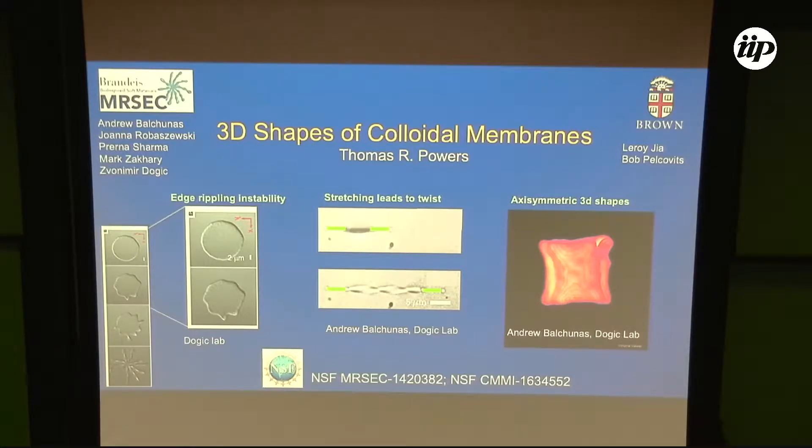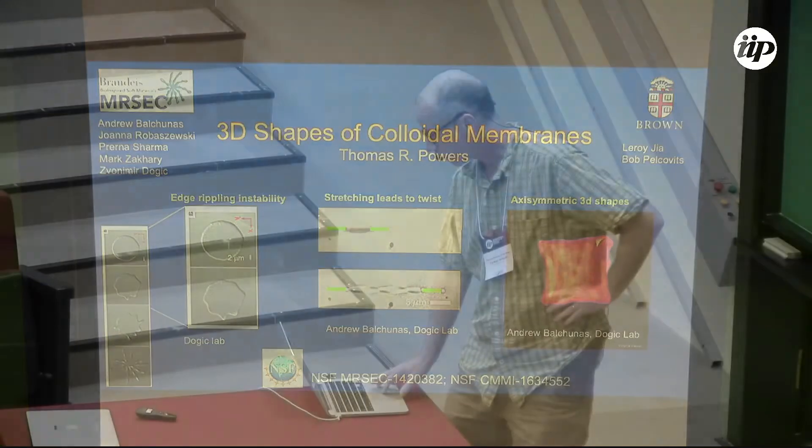I'm going to focus on the three-dimensional shapes that these two-dimensional colloidal membranes make, and I'll talk about three different problems. On the left you see a flat membrane which, when cooled, starts to ripple along the edges. I'm going to talk about the instability of that edge and how it ripples into three dimensions.